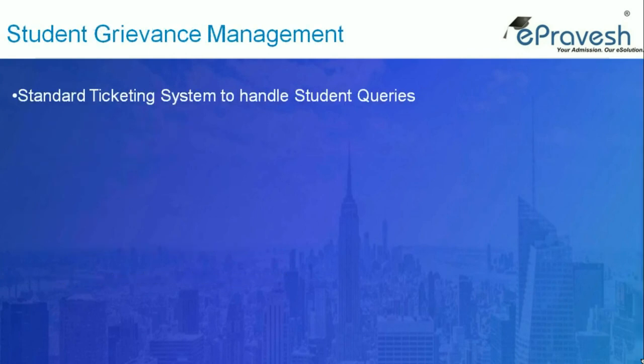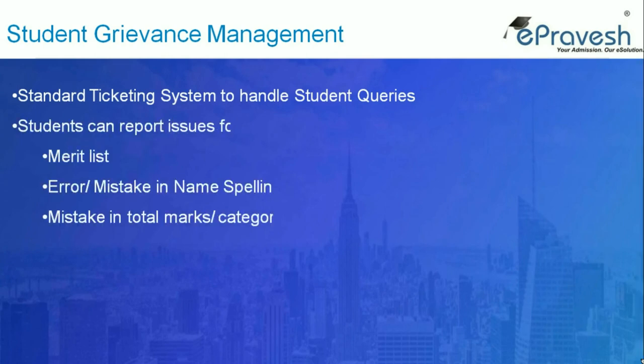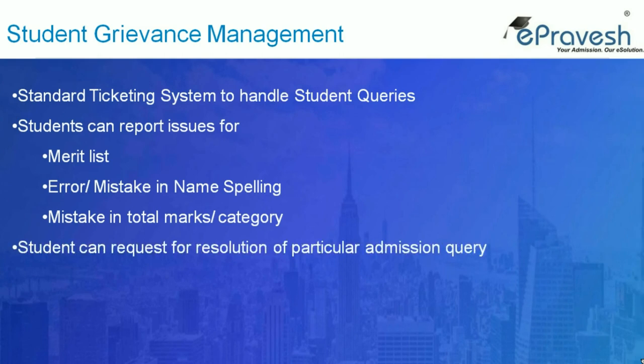Student grievance management is a standard ticketing system to manage student queries. Students can report their concern or query using their login, and the admission committee resolves it. Students can report issues related to the merit list, such as name correction, mistaken total marks, or incorrect category shown in the provisional merit list.